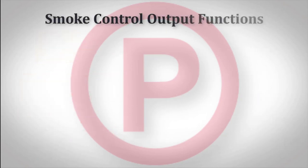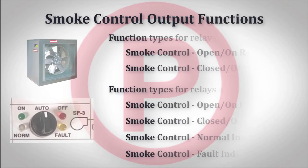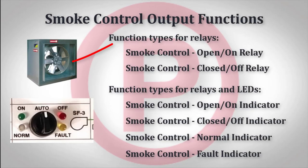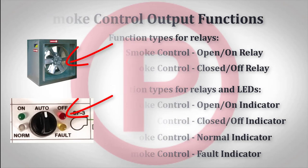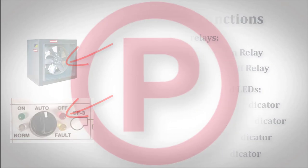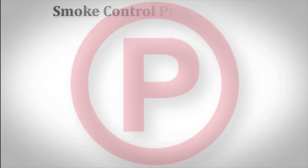The smoke control output function types are as follows: smoke control open or on and closed off relays for controlling the fans or dampers; smoke control open or on, closed or off, normal, and fault indicators to illuminate the LEDs on the firefighter's smoke control station.